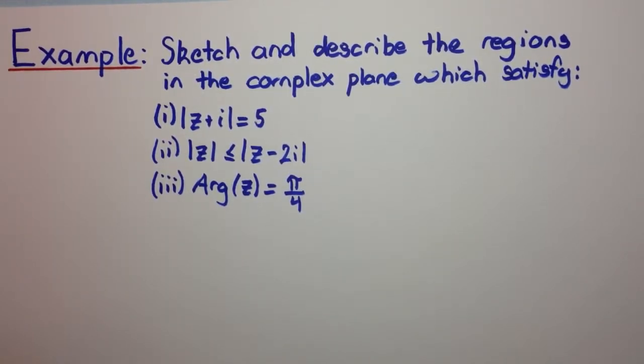Part 1: The modulus of z plus i equal to 5. Part 2: The modulus of z less than or equal to the modulus of z minus 2i. And part 3: The argument of z is equal to pi on 4. We'll have a look at these three individually.